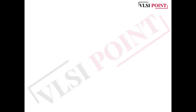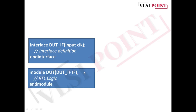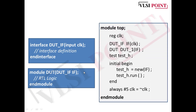We also use an interface to connect the environment with the DUT. The interface is defined, the DUT is a module, and in the top-level module we generate the clock, instantiate the interface, and connect the DUT with the test case using interface instances. In the top-level module, the interface, the DUT, and the test are all instantiated. This is how we use the class data type to create all the test bench components and implement different kinds of test cases using object-oriented programming.